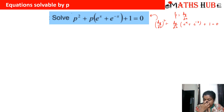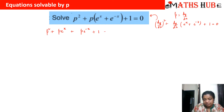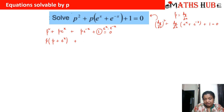Now let us try to factorize this differential equation. We can pair P² with P·e^x, and P·e^(−x) with 1, giving P² + P·e^x + P·e^(−x) + 1 = 0. Taking P common from the first two terms gives P(P + e^x), and writing 1 as e^x·e^(−x), taking e^(−x) common from the last two terms also gives (P + e^x). So we get two linear factors: (P + e^x)(P + e^(−x)) = 0.